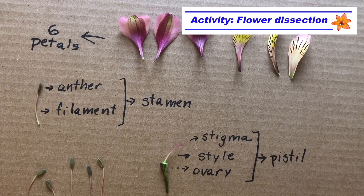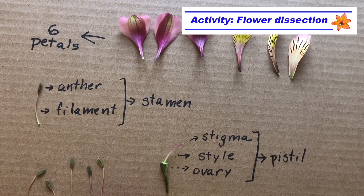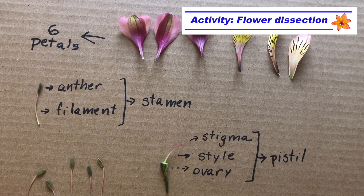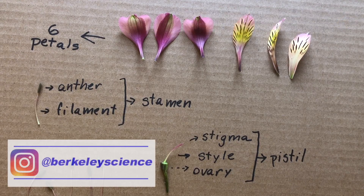I hope that you also get to try this activity at home. If you do, you can ask an adult to take a picture of your labeled parts and share with us on Instagram tagging us at Berkeley Science.